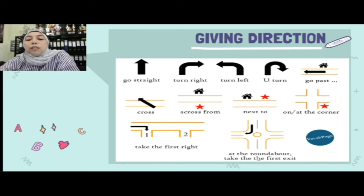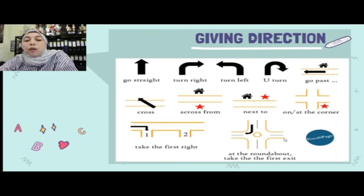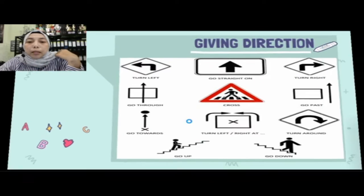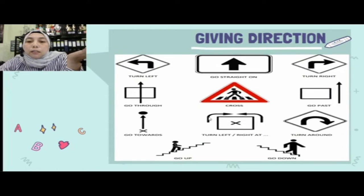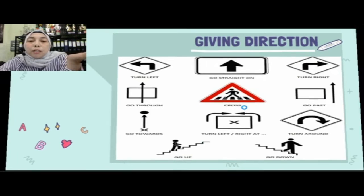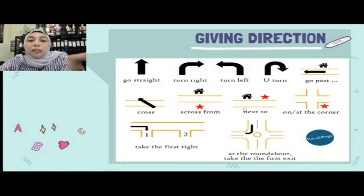Kalau ada bundaran, kita bisa bilang 'at the roundabout, take the first exit' — boleh keluar di arah pertama atau arah kedua. Ini adalah kira-kira kata-kata yang dipakai ketika kita memberikan informasi kepada seseorang yang bertanya tentang suatu tempat.